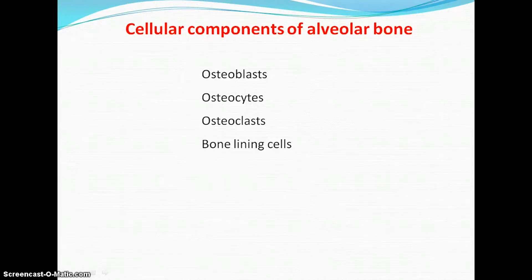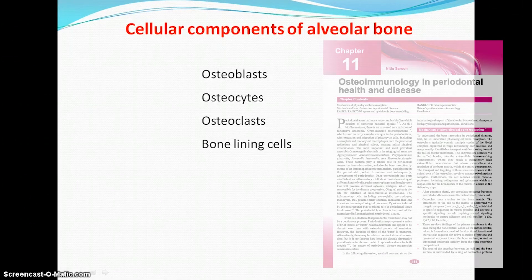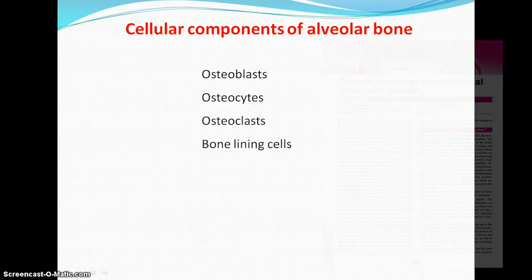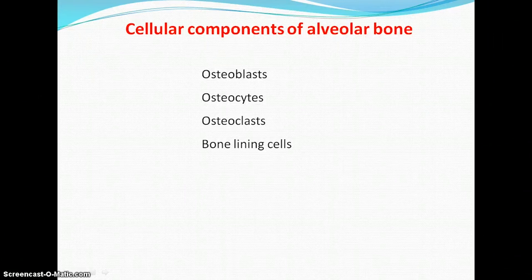Bone remodeling involves three important terminologies: RANK, RANKL, and osteoprotegerin (OPG). A detailed description of these three terminologies has been given in a separate chapter on osteoimmunology of periodontal diseases, available in the book or on the website.